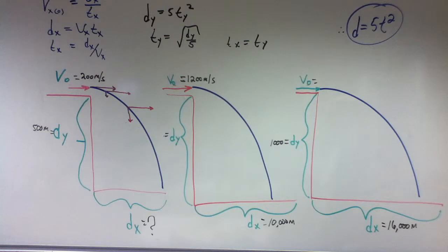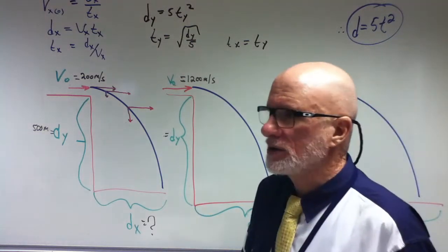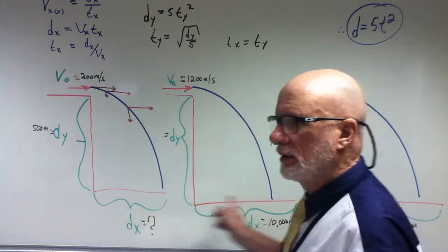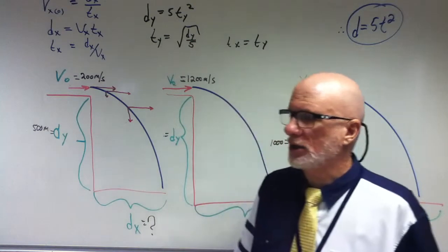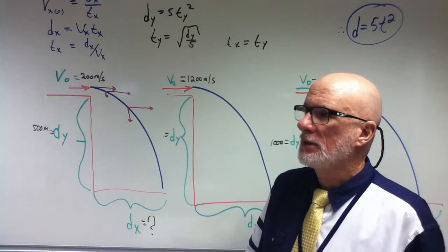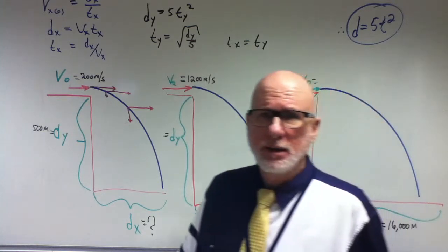What does the VX stand for? That's the velocity in the horizontal direction. X means horizontal. And Y? Y is vertical, just like on the Cartesian coordinate system. And what's the little O mean? The little O means initial.